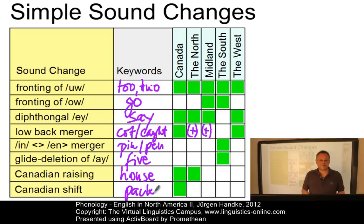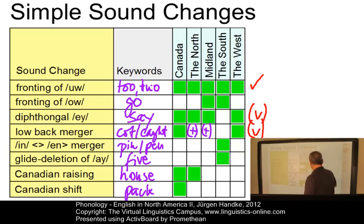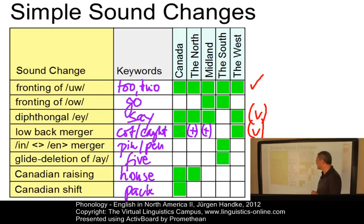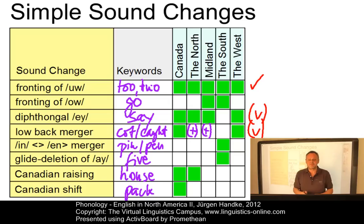Thus, we can find some sound changes that unify the entirety of North America — for example, the fronting of U. Others apply to large areas, such as diphthongal A and the low back merger. Several ongoing sound changes can be clearly associated with particular areas such as the South or the North. There are also additional regionally restricted sound shifts such as the short-A split in the North and North East, or the Southern drawl in the South.